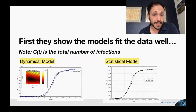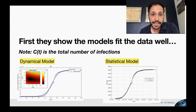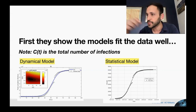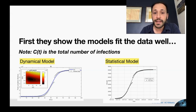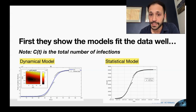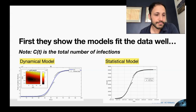Who is being tested also differs from country to country, and it has been changing over time as guidelines from public health organizations change on who should be tested. First, they establish that the models they're going to evaluate reproduce the data very well. Here we have two different models — on the left, a dynamic model where you model infection rates and how likely it is to pass from one person to another.